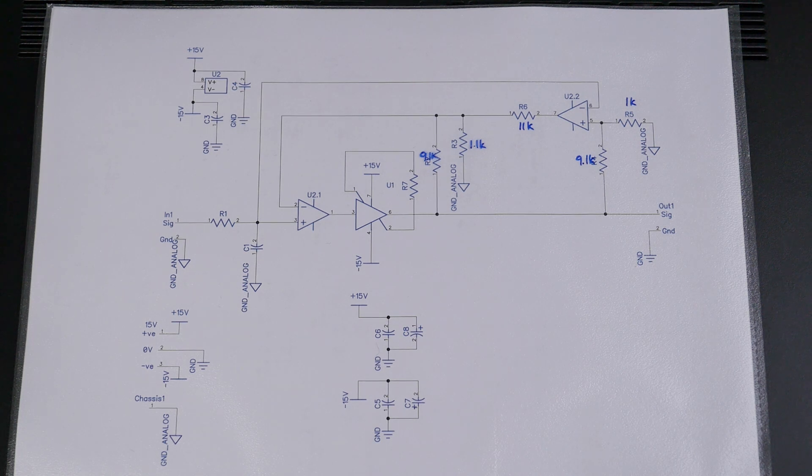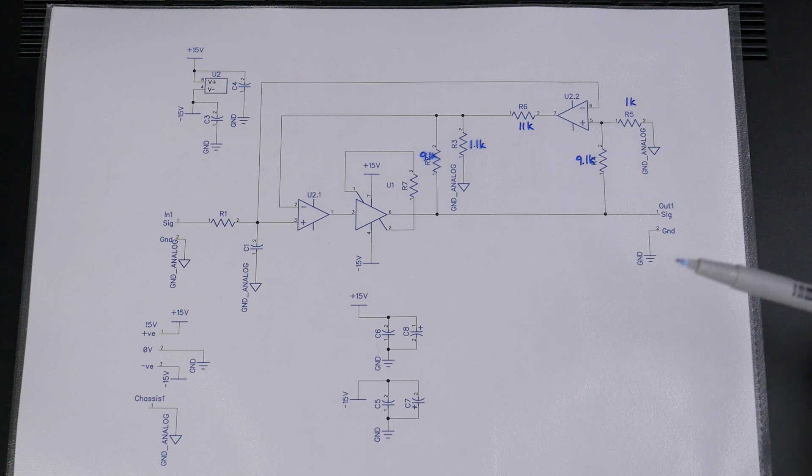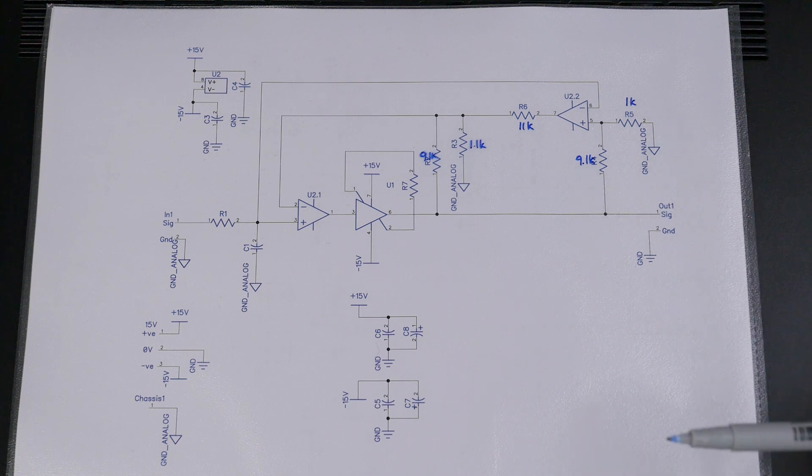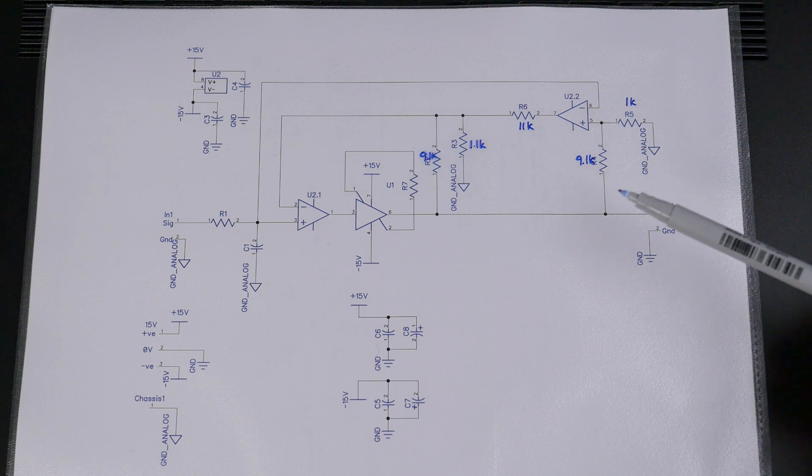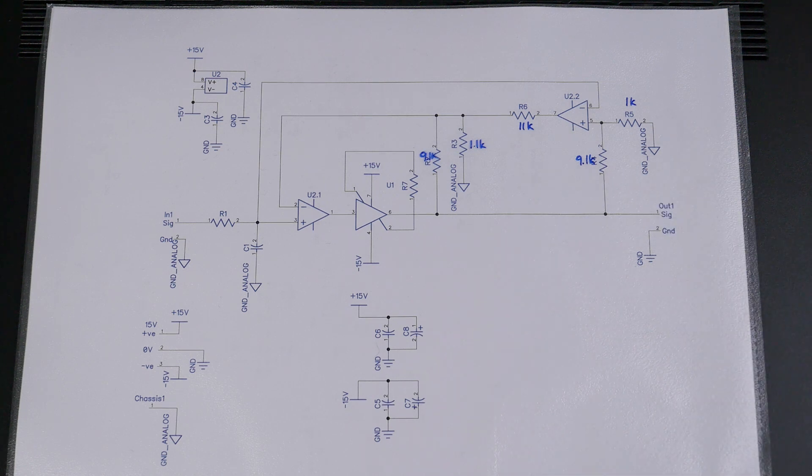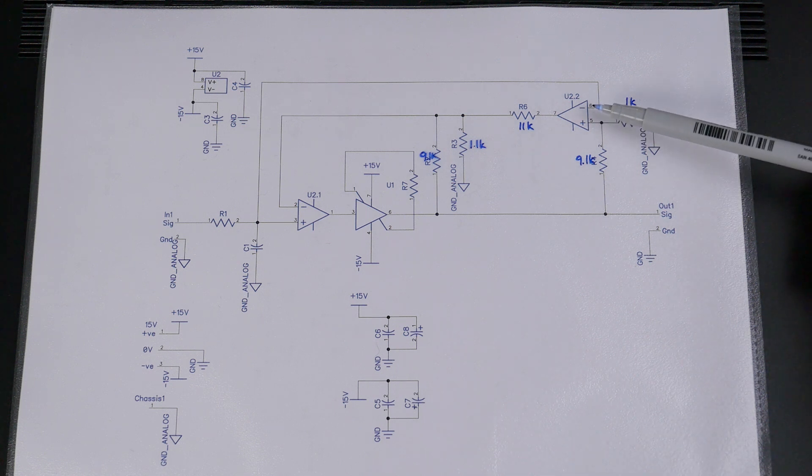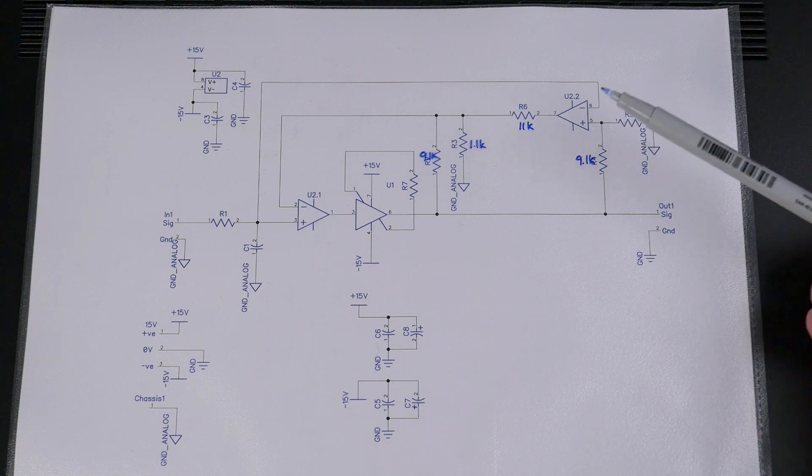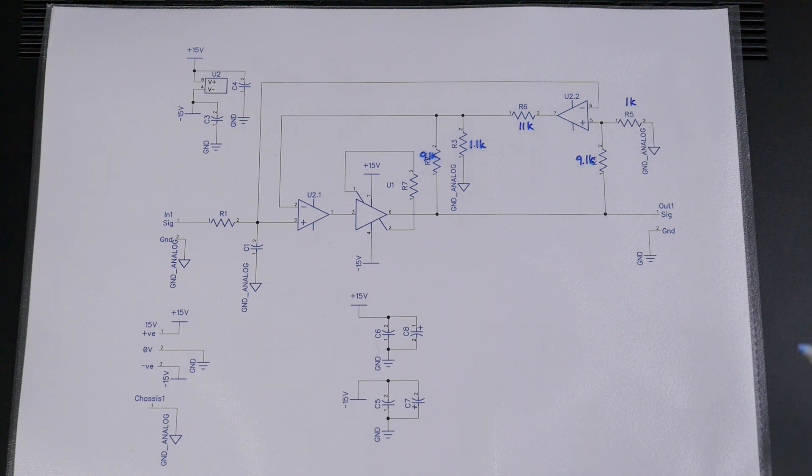Now the accuracy of any error correction scheme like this does depend on various things. One of them is the precision of these resistor pairs and in this case we've gone with 0.1% resistors, these are actually 9.09, you can't get a 9.1 in a 0.1% resistor. There are other aspects, the common mode distortion characteristics of the op amp are important and once we've got that error signal it's a question of what do we do with it.